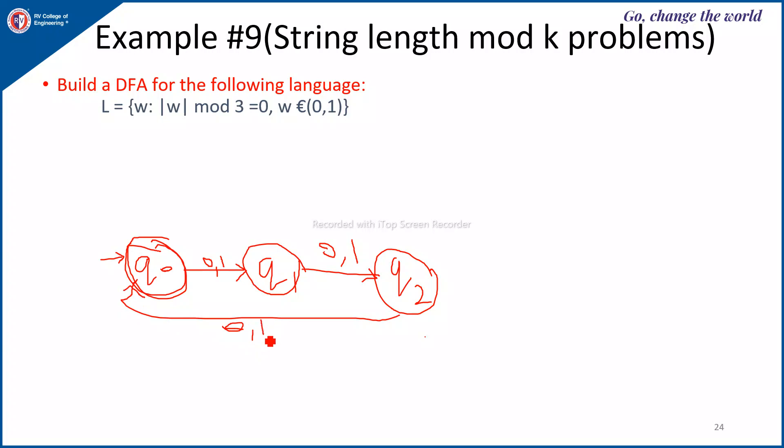Here it is not the counting of 0s or 1s, it is the total length of the string must be multiple of 3. So 0, 0, 1, 0, 0, 0 length of 3, they are accepted. Length 4 is not accepted, length 5 is not accepted.